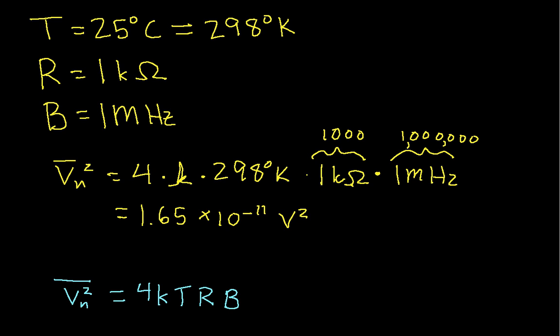So this means that the RMS voltage, V sub n, will be the square root of this guy, and when you compute that, that turns out to be 4.06 times 10 to the minus 6 volts, which I can also write as 4.06 microvolts.